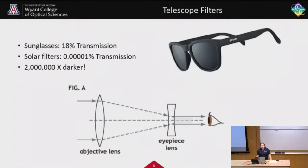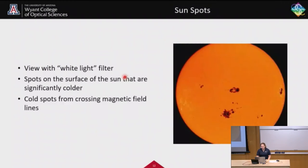To actually observe the sun, we need telescope filters. Even without a telescope you wouldn't want to look at the sun with your naked eye, but condensing all that light through a solar telescope without a filter could blind us by concentrating the energy in a small area. Sunglasses have about 18% transmission, while solar filters have 0.00001% transmission — about 2 million times darker — to be safe for our eyes and produce a good image. With a white light filter, uniform across all wavelengths, we can see sunspots: cooler spots caused by crossing magnetic field lines that emit less thermal energy.